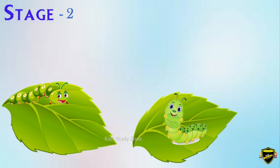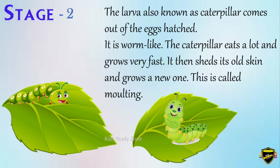Stage 2: the larva, also known as caterpillar, comes out of the hatched eggs. The caterpillar eats a lot and grows very fast. It then sheds its old skin and grows a new one. This is called molting.